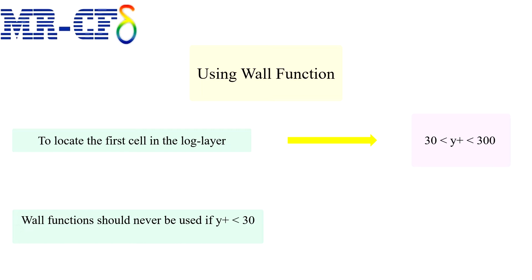To locate the first cell in the log layer, it should typically have a Y plus value such that Y plus between 30 and 300. This is a very general guideline.